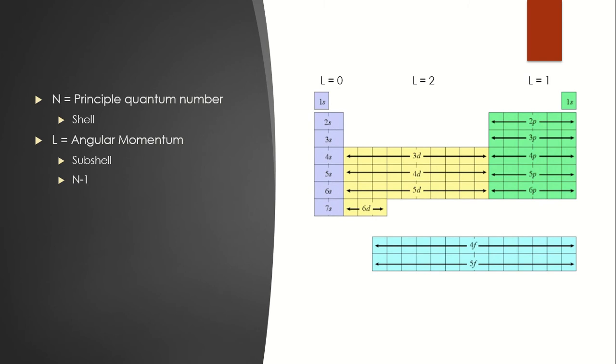Now on the right, we have the periodic table, and it is split up into four different sections depending upon the L value. So L equals zero is going to be on the very left. L equals one is going to be on the very right. L equals two is going to be in the middle. And then we have an L equals three, which are those elements that fit in right there.